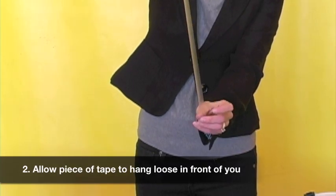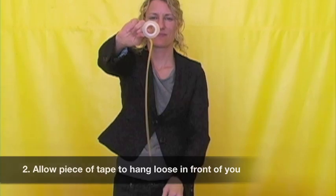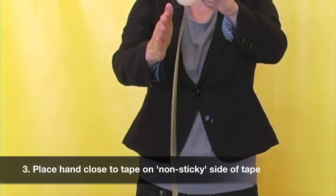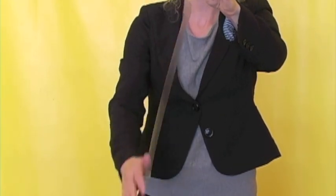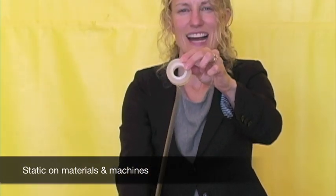Allow the piece of tape to hang down as you hold your arm out. Put your hand near the non-sticky side of the tape. See how the static charge on the tape is attracted towards my hand? This is a good way to demonstrate to your customers how the static electric field goes out in all directions in space.